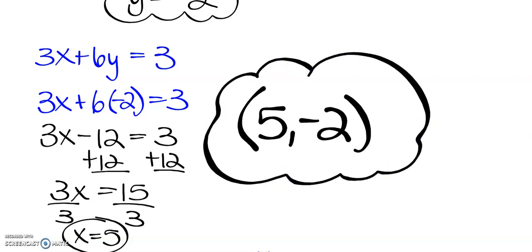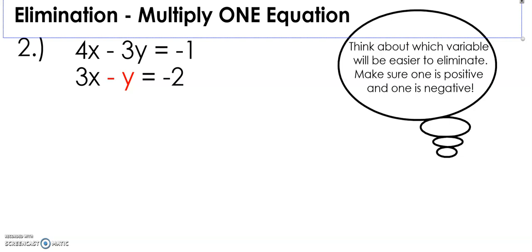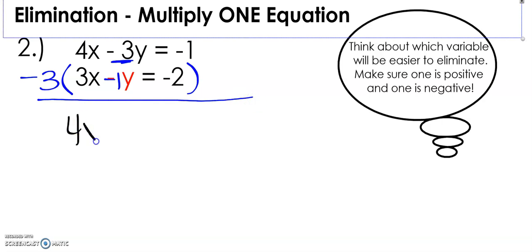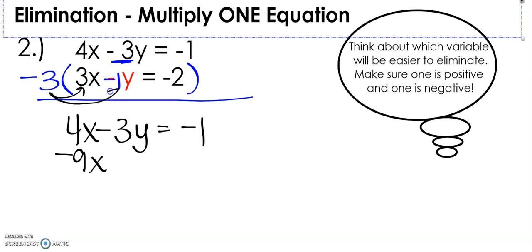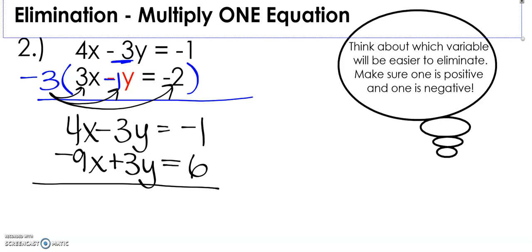Let's take a look at another example. We need to think about which variable would be easiest to eliminate. I've highlighted the negative 1y — we need to make that negative 1y a positive 3y to cancel with the negative 3y in the first equation. So we're going to multiply the entire second equation by negative 3, because negative 3 times negative 1 gives us positive 3. The first equation stays as 4x minus 3y equals negative 1. Distributing negative 3 gives us negative 9x plus 3y equals positive 6. Now we're ready to combine the two equations.